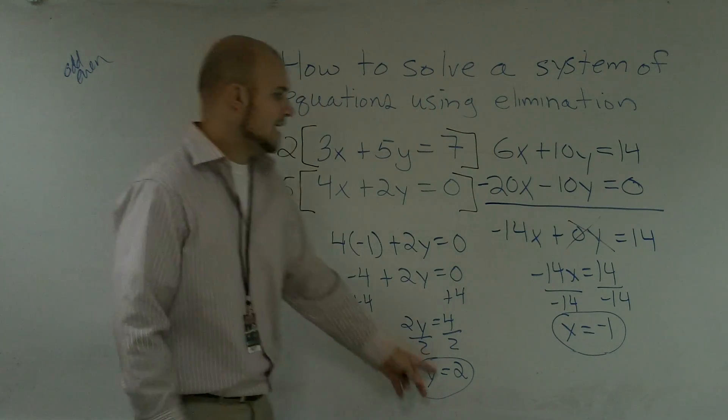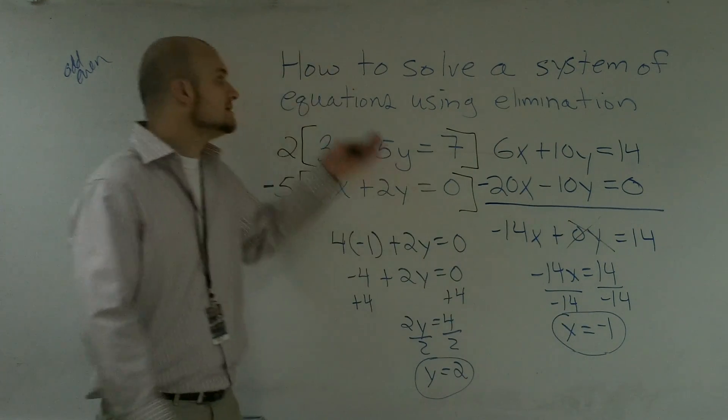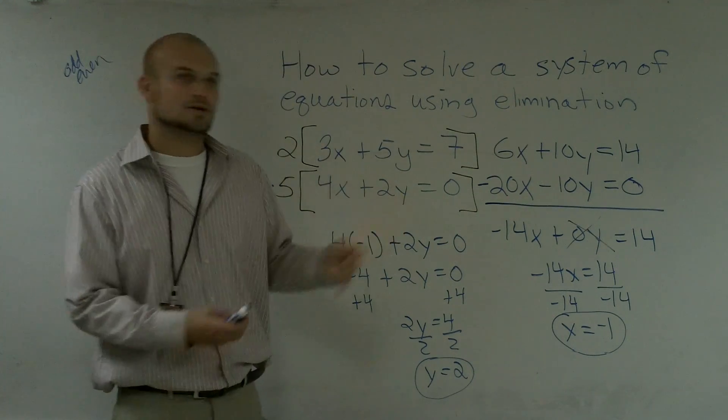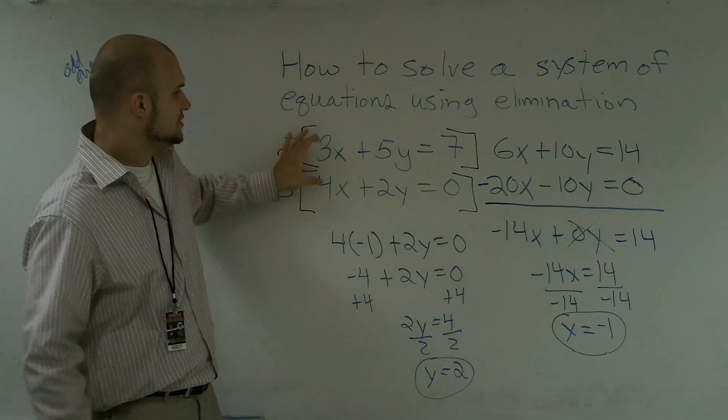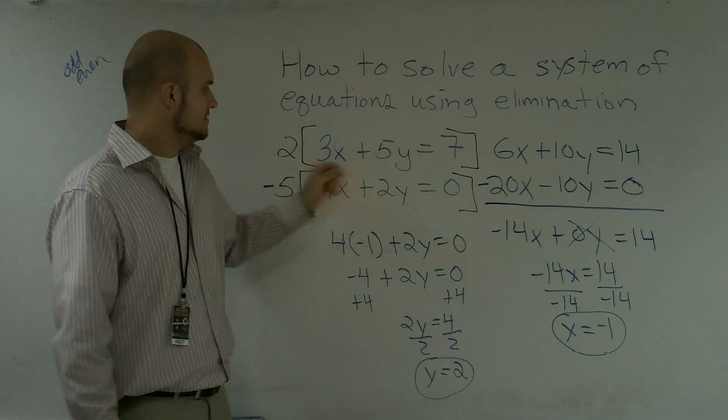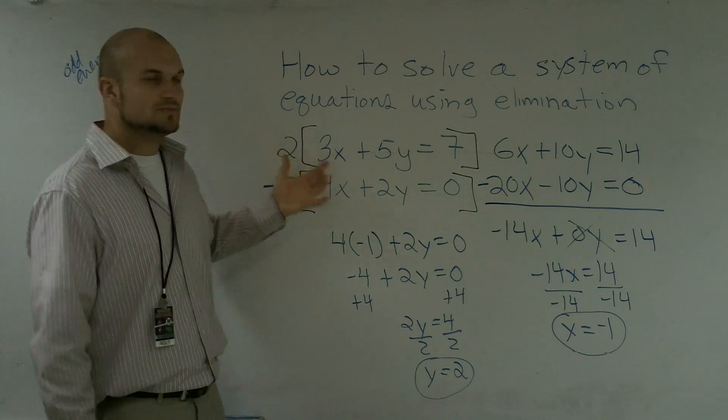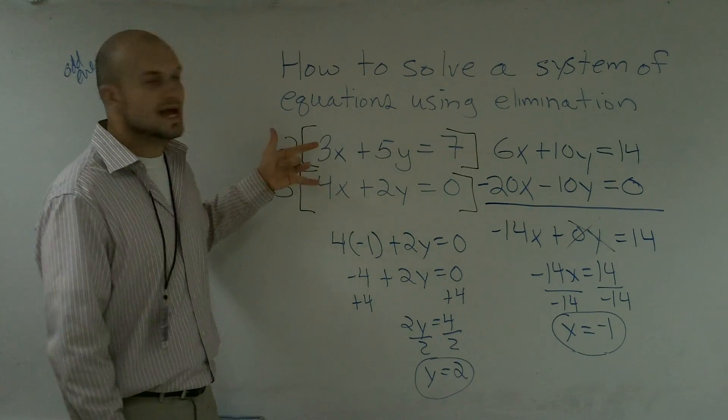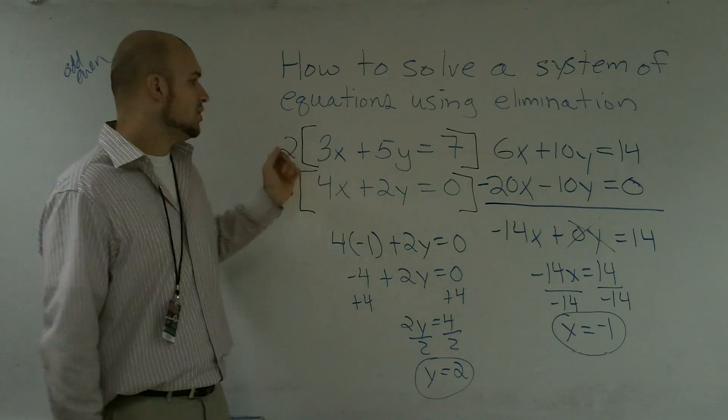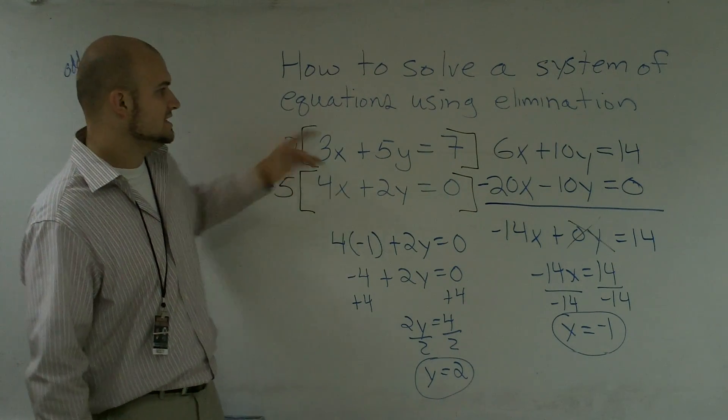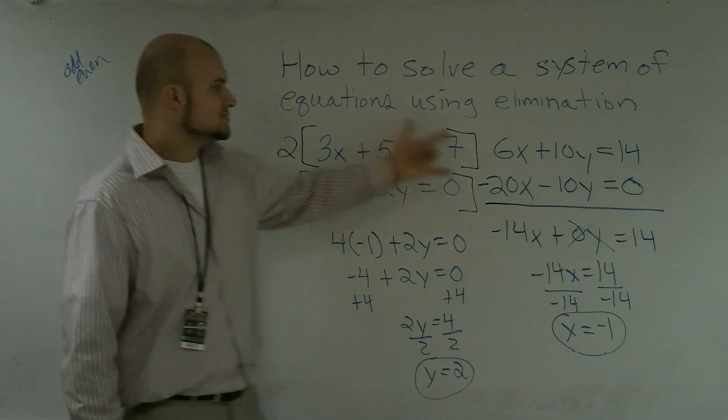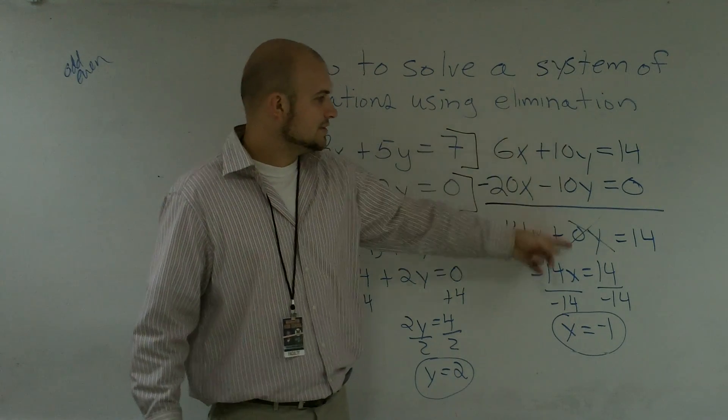Now you have just solved for your y variable and your x variable by using elimination to solve a system. So again, I'll go through the steps real quick. Make sure you decide which variable you want to cancel out. Then you find whatever multiple those variables have in common. In this case for y, it was 10. For the x's, it would have been 12. Then you multiply by your given multiple to give you your LCM. Make sure one is positive and one is negative so that when you add them up, they're going to cancel out.